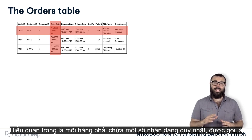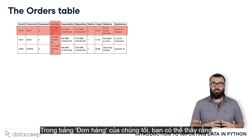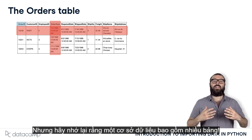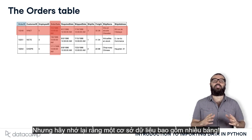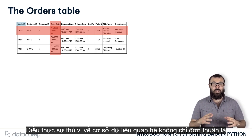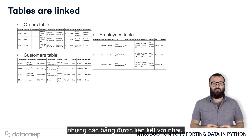It is essential that each row contain a unique identifier, known as a primary key, that we can use to explicitly access the row in question. In our Orders table, you can see that the key is Order ID, the first column. But recall that a database consists of many tables. The really cool thing about relational databases is not merely that you have a bunch of tables, but that the tables are linked.